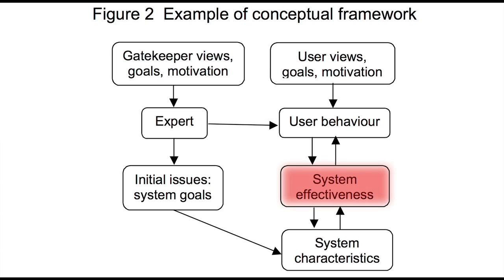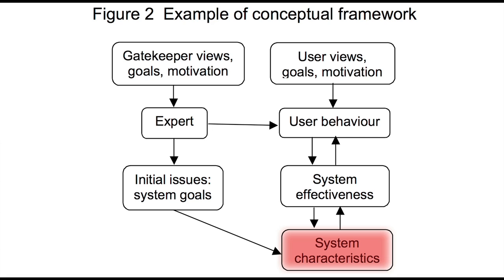User behaviour clearly has a big impact on the system effectiveness, and that has an effect back on how they behave. So if the system works well, they might change their behaviour in certain fashions; if it doesn't work well, they might change their behaviour in different ways. Also the characteristics of the whole system that's been set up might have an impact on effectiveness. So what this diagram indicates is this very broad brush example of an organisation going through something to change — here are the things you need to look at. It gives you a kind of framework for thinking about that.